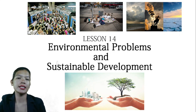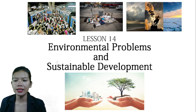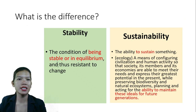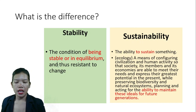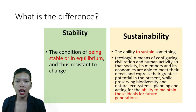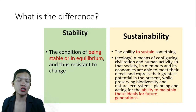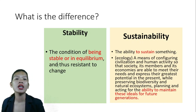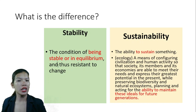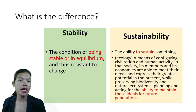Let us start by defining stability versus sustainability. Stability is the condition of being stable or in equilibrium, and thus resistant to change. Sustainability, on the other hand, is the ability to sustain something. In ecology, it means configuring civilization and human activity so that society and its members and economies are able to meet their needs.